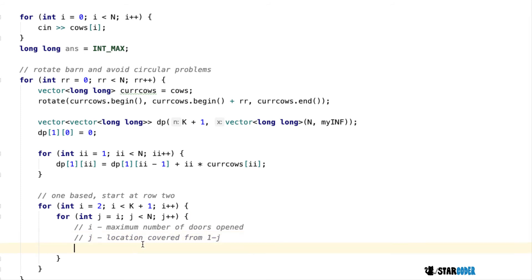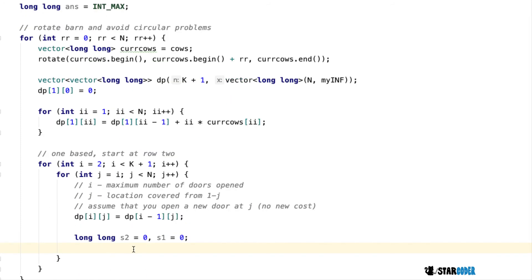We have our two prefix sums, s2 and s1, which store the cost or the distance that the cows are walking.